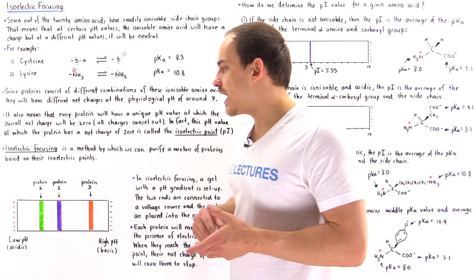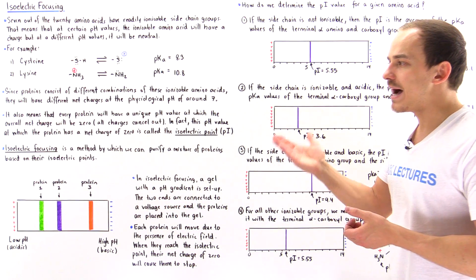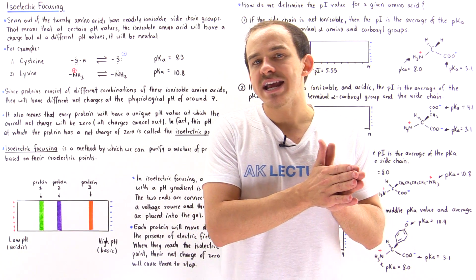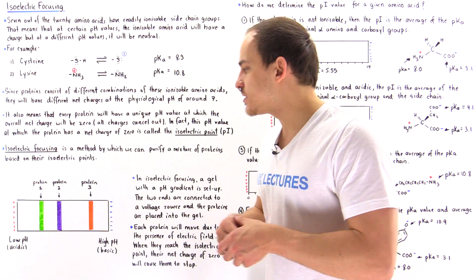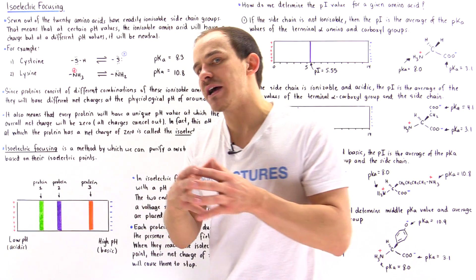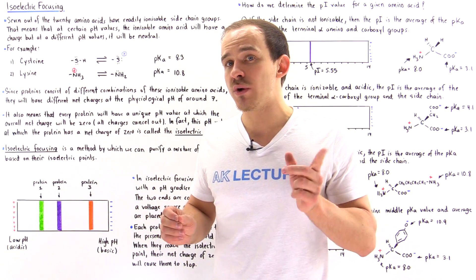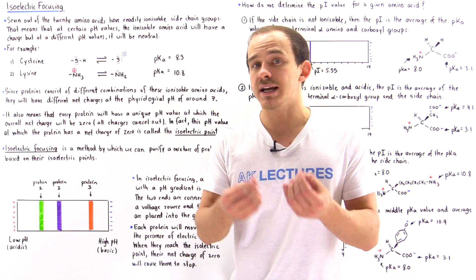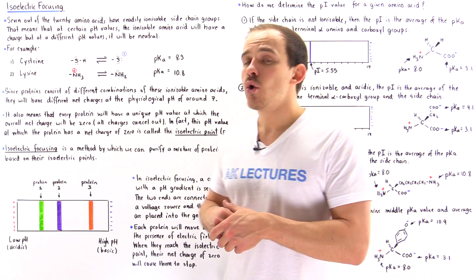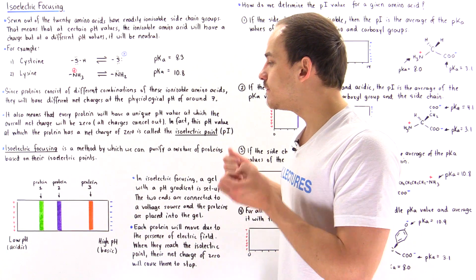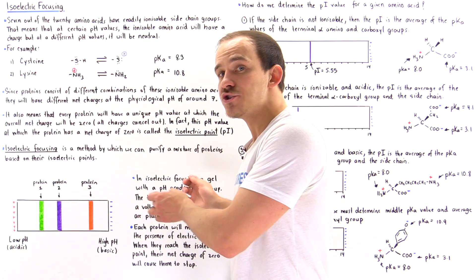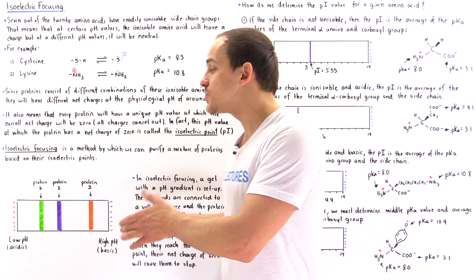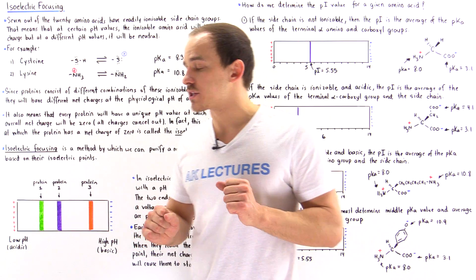Let's look at a diagram describing the setup of isoelectric focusing. We create a special gel and establish a pH gradient along it. On the left side of the gel we have a low pH, acidic environment; on the right side we have a high pH, basic environment. We also connect both ends of the gel to a voltage source, creating an electric potential difference and therefore an electric field across the gel.